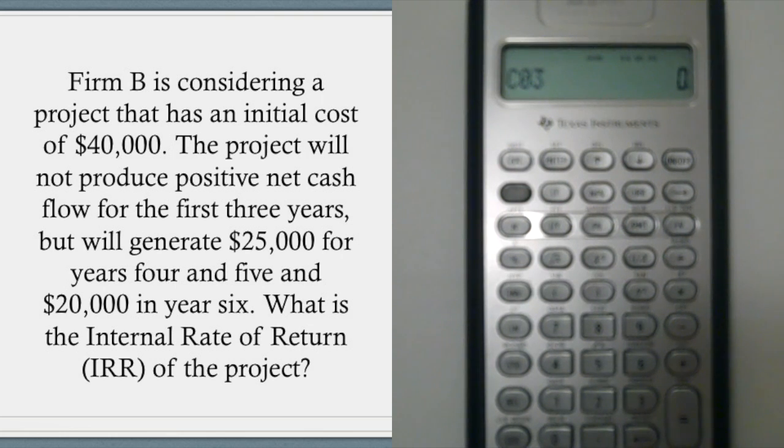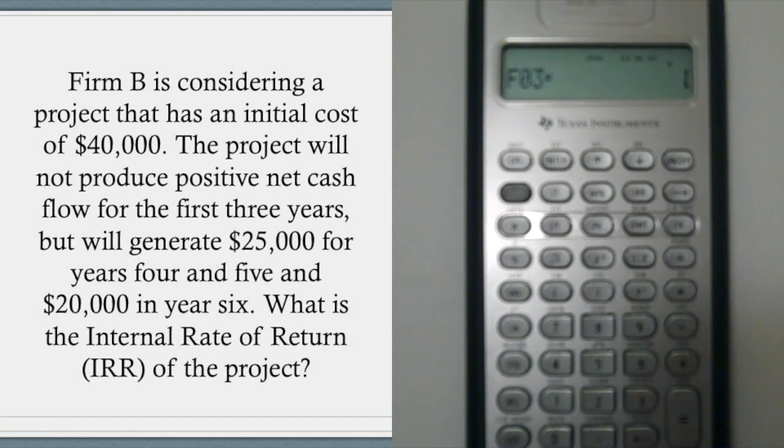And C03 is the third cash flow, which in this case is $20,000. And that only happens once.